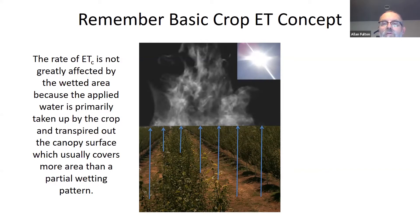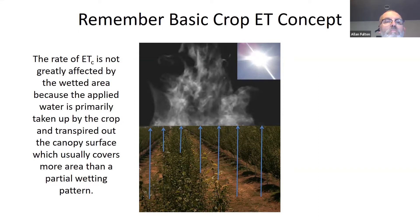Furthermore, you can see that within the shaded area beneath the trees is a single line drip used to irrigate this orchard. So it's a very small fraction of the orchard that is actually being irrigated, yet the crop evapotranspiration is still occurring from the entire orchard surface and mostly out the canopy of the trees.